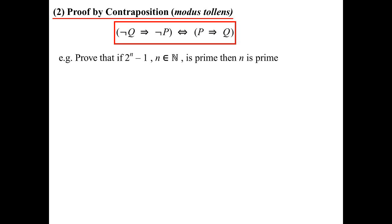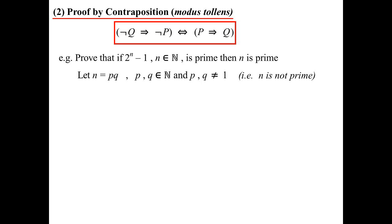We're going to prove that if 2^N − 1 is prime, then N has to be a prime number. Note N here is a natural number, so it's positive and can't be zero. I'm going to let N equal P times Q, where P and Q are natural numbers not equal to 1 — because 1 is not a prime number. What I'm basically saying is N ends up not being a prime number, since a prime has exactly two factors: 1 and itself. If neither P nor Q is 1, I can't have a prime.